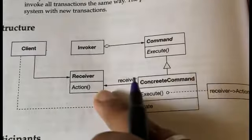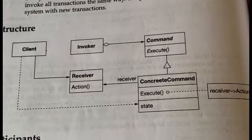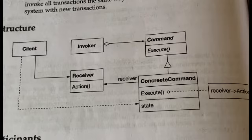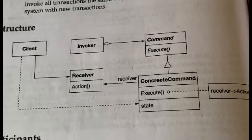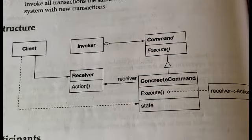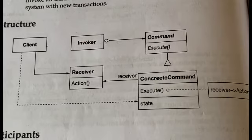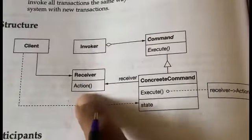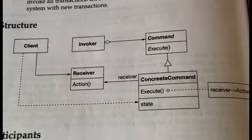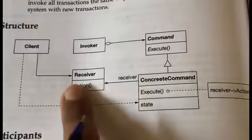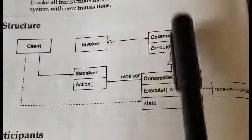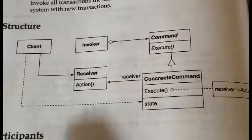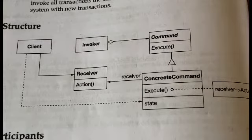The Receiver knows how to perform the operations associated with carrying out a request — it knows what operations need to be performed in order to execute the particular request. Any class in the system can act as a receiver. So to summarize the participants: Client, Invoker, Command, Receiver, and Concrete Command.